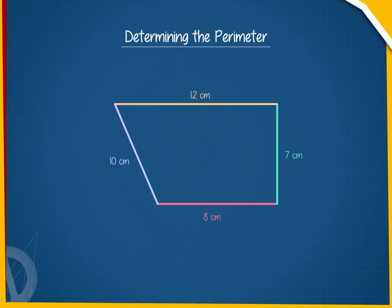In this figure, all the sides have different lengths. The perimeter will be 7 cm plus 8 cm plus 10 cm plus 12 cm equal to 37 cm.